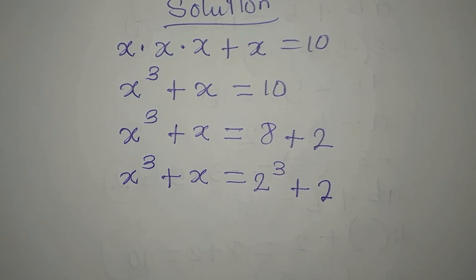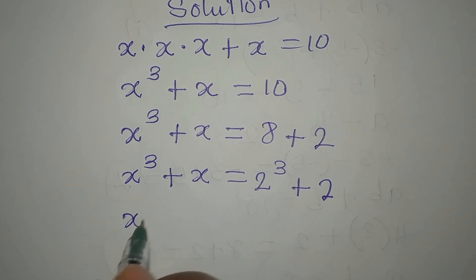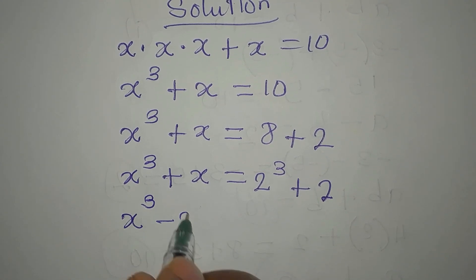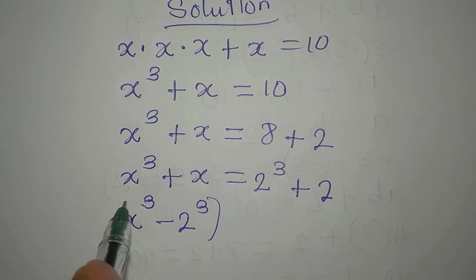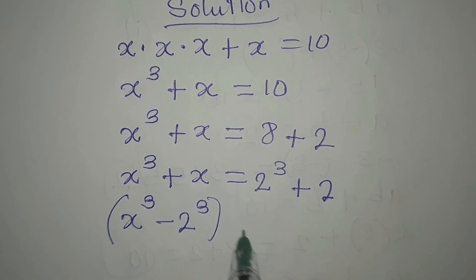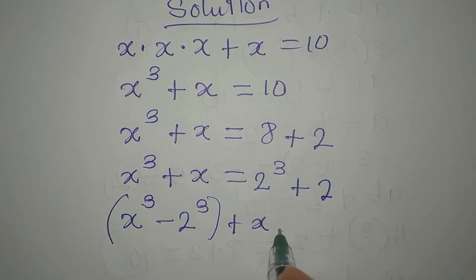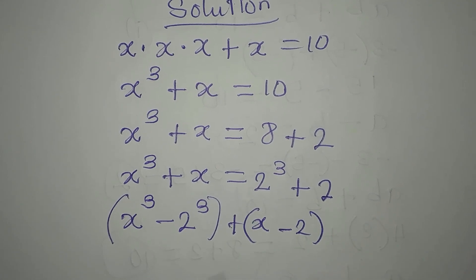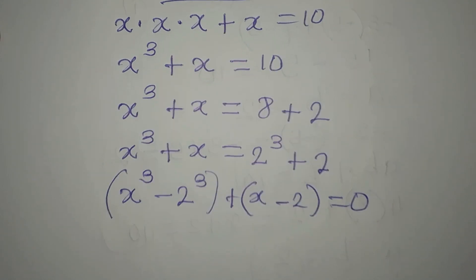Let's regroup so that we have X to the power of 3 minus 2 to the power of 3 together, then plus X minus 2 on the other side, and we equate everything to 0.